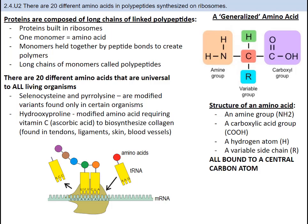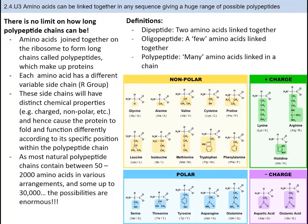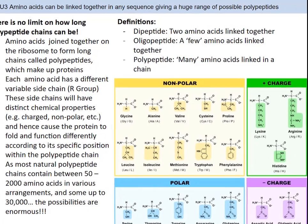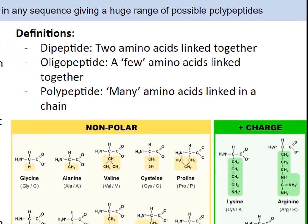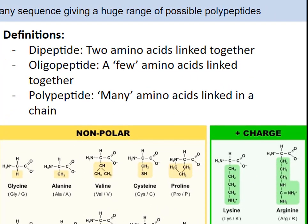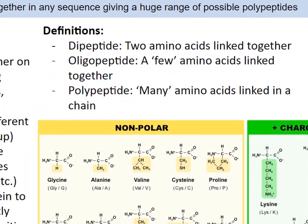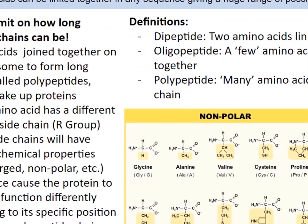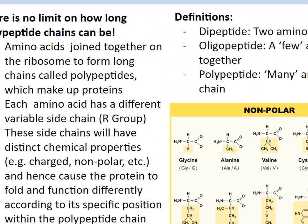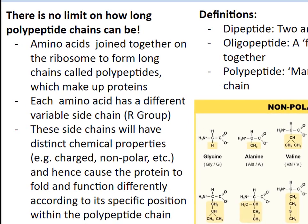Now that you know the basic chemistry behind proteins and how they are made, let's discuss this further in depth. Polypeptides are molecules consisting of many amino acids linked by peptide bonds. The polypeptides can contain any number of amino acids, though chains of fewer than 20 amino acids are usually referred to as oligopeptides rather than polypeptides. Two amino acids linked together are called dipeptides, with 'di' meaning two. Take insulin for example — insulin is a small protein that contains two polypeptides, one with 21 amino acids and the other with 30.